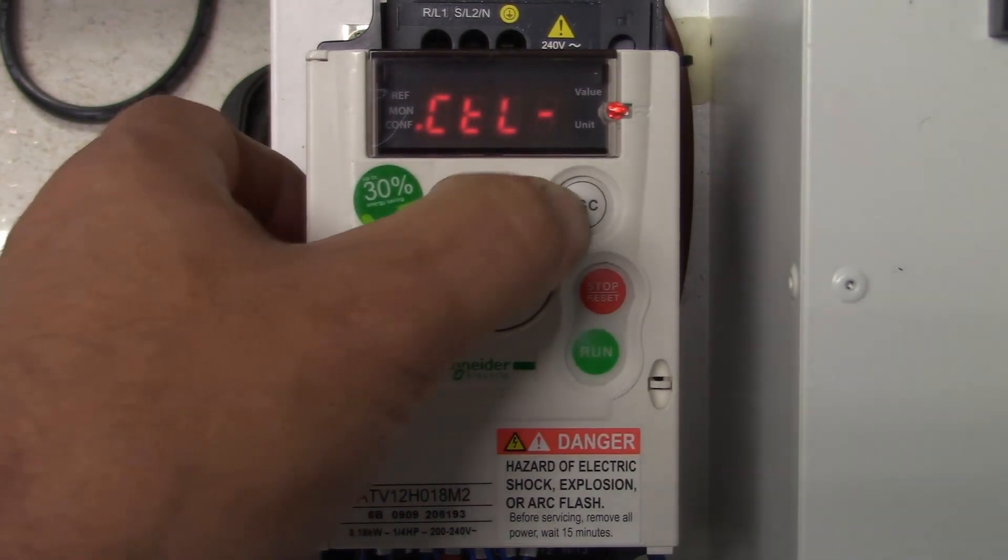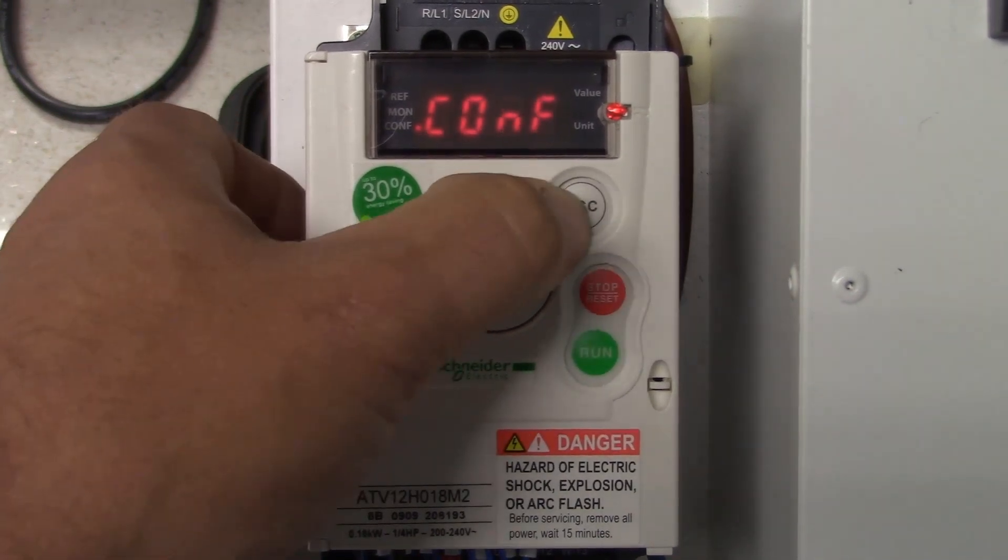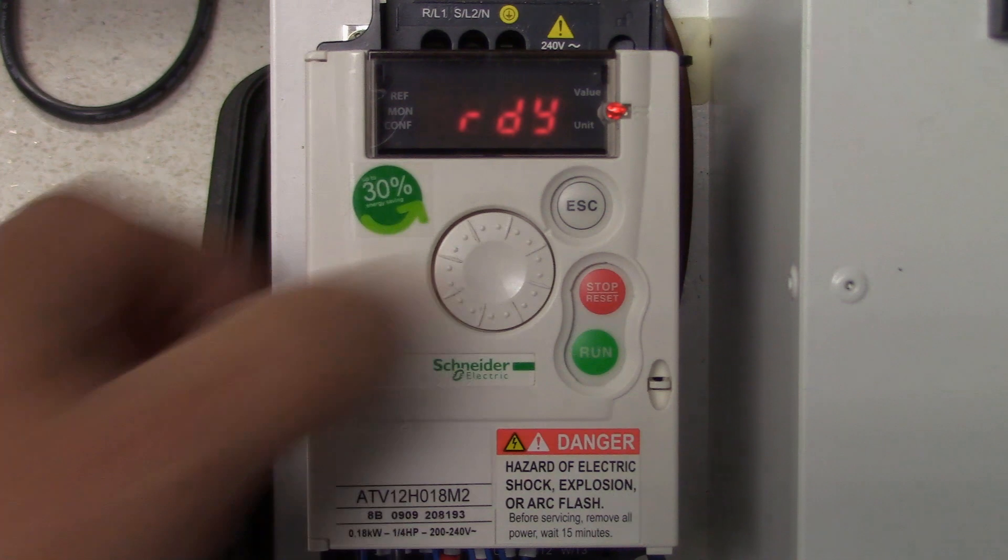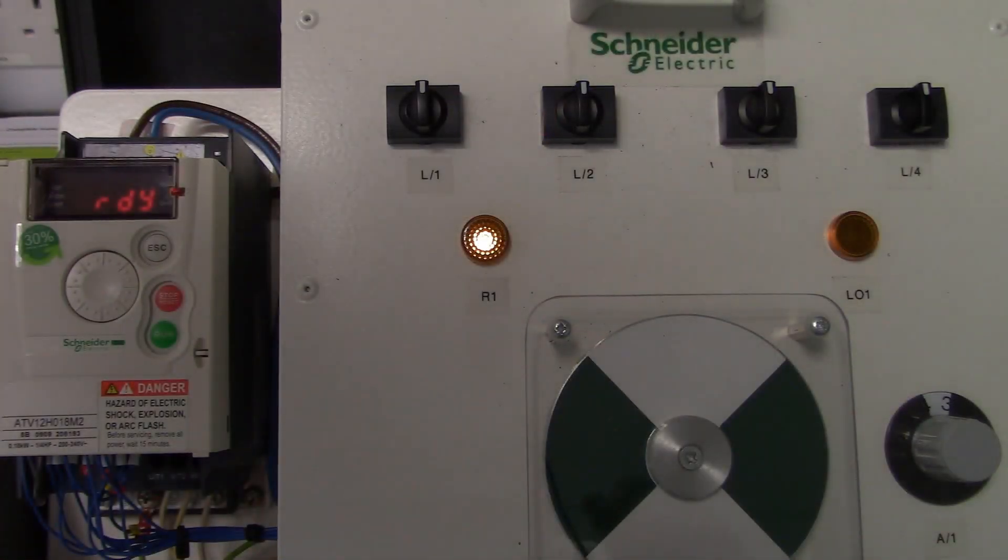In this case the A1U1 is the reference and our terminals are the commands. The CHCF parameter would need to be on SEP if you use any selection in FR1 as the reference.